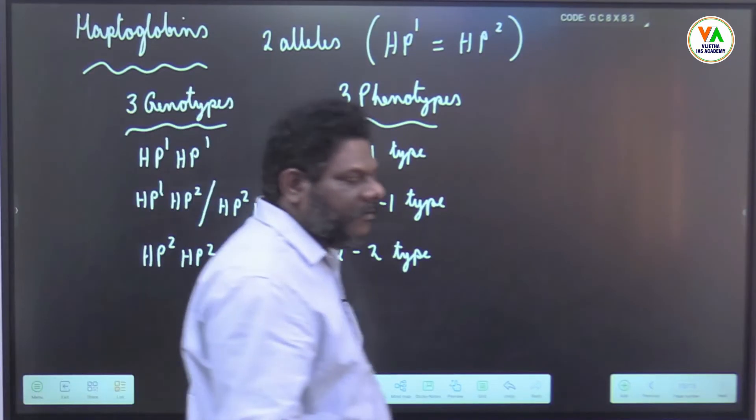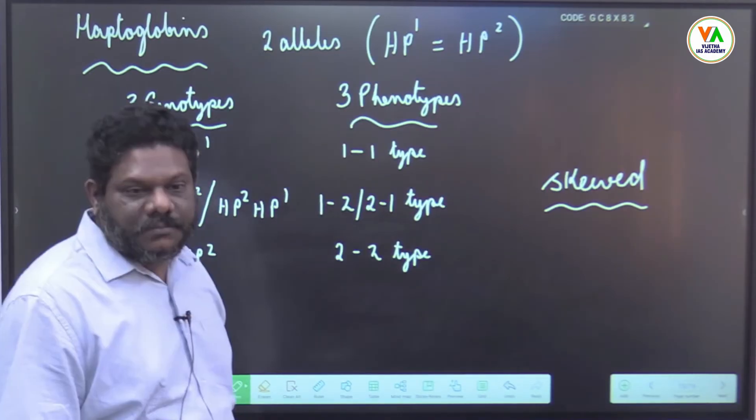The genes responsible for both haptoglobins and transferrins are present on P arm of chromosome number 3. The distribution of these alleles is quite skewed in different population groups. Hpc and Hpd, fast-moving and slow-moving variants are there.